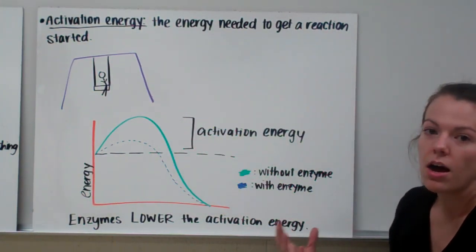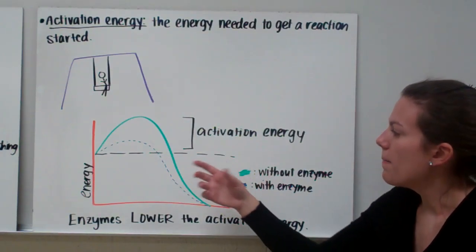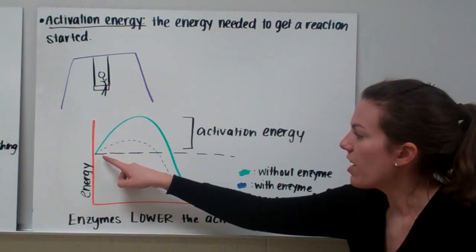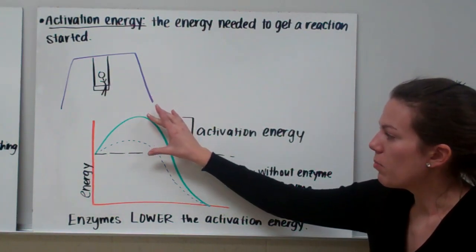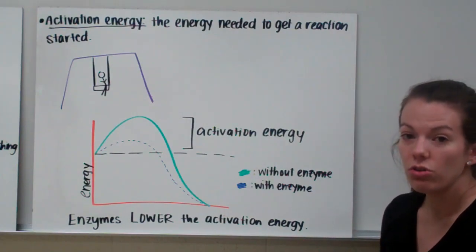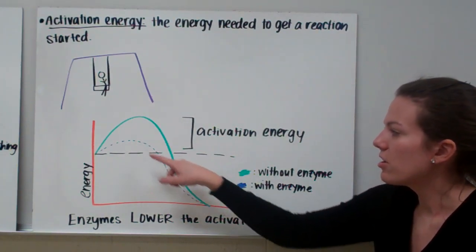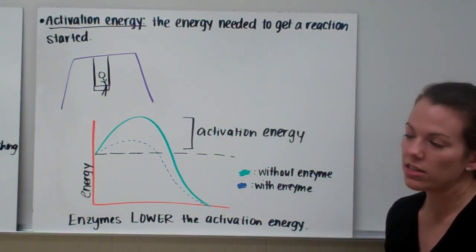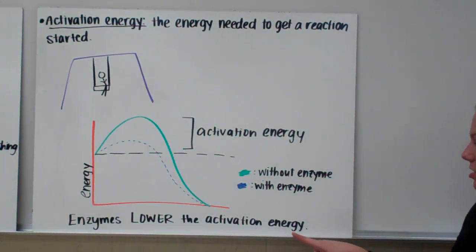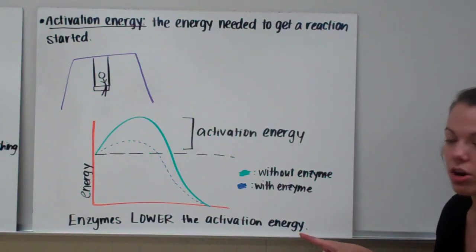You'll see that in a graph like this, when we're comparing reactions with and without enzymes, reactions without an enzyme need more energy, so their line goes higher on the graph. And reactions that use an enzyme, their line doesn't need to go as high. They don't need as much energy to get started. So enzymes lower the activation energy. They lower the amount of energy that's needed to get the reaction started.